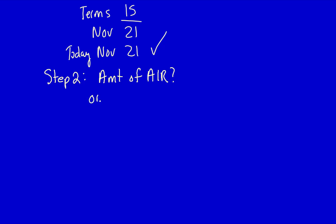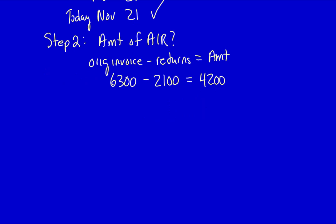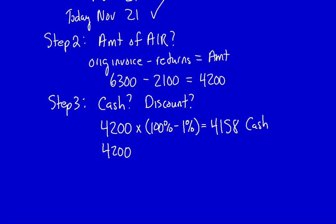Today is November 21st, so Hayden can take the discount. Step 2: what is the amount of the accounts receivable? Take the original invoice and subtract any returns. The original invoice was $6,300, the return was one-third — $2,100 — so the AR balance is $4,200. Step 3: what's the cash amount and the discount? Multiply the AR balance by (100% minus the discount rate): $4,200 × 99% = $4,158 cash. The discount is $4,200 − $4,158 = $42.